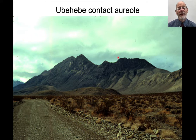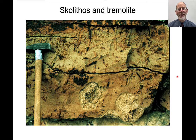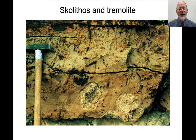The Ubehebe contact aureole is one that I have visited, in Death Valley National Park. This is Ubehebe Peak — a big intrusion that intrudes into siliceous limestones, so there's a contact aureole extending from the edge of the intrusion outward. Some of these rocks are completely incredible. In one of these limestones you can see long, skinny lines — worm burrows, so-called Skolithos. This rock has been completely undeformed and retains these trace fossils. But down here you see cauliflower-shaped blobs of tremolite — big rosettes of tremolite, more or less spherical. These are metamorphic; the heat from the intrusion plus water plus silica caused this siliceous limestone to react to form tremolite.